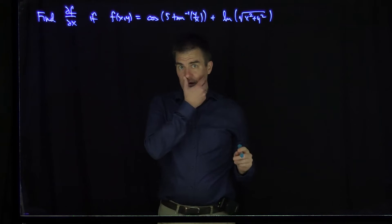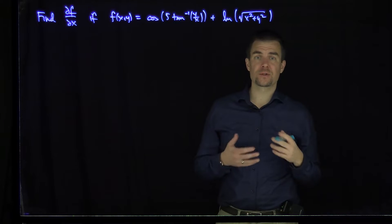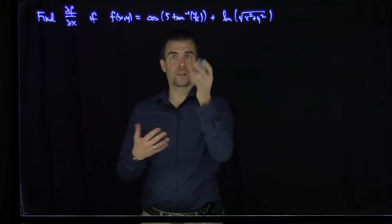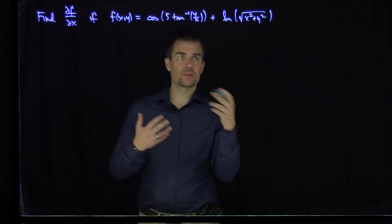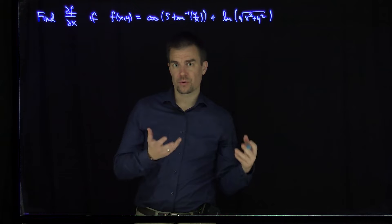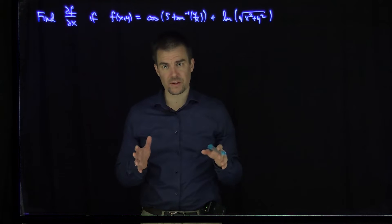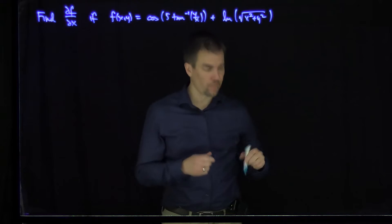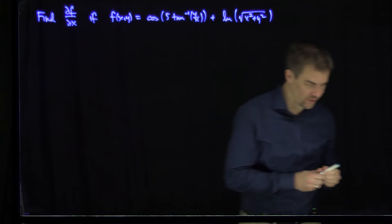The first thing to observe about this function is it looks incredibly messy to do the x derivative, because there's inverse tangents, there's cosines, there's natural logs, there's square roots — a whole bunch of messy things. However, if we put this function into polar coordinates, what do we see?